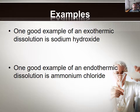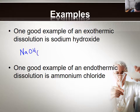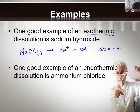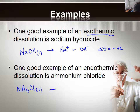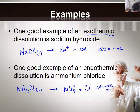One good example of an exothermic dissolution is sodium hydroxide. We have sodium hydroxide, which is a solid, and when it goes into solution it forms sodium ions and hydroxide ions, and this will have a negative delta H value as it is exothermic. An example of an endothermic process is the dissolution of ammonium chloride — again a solid which we dissolve in water, forming ammonium and chloride ions, and its delta H value will be positive. We'll have a look at an example in the final video in this series. Thanks for watching.